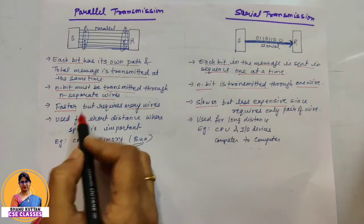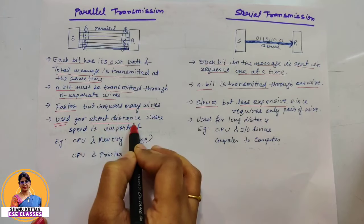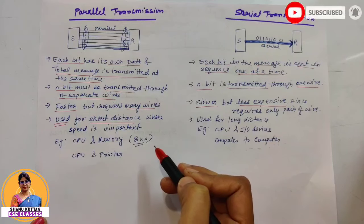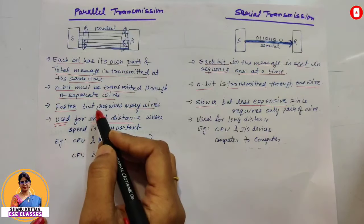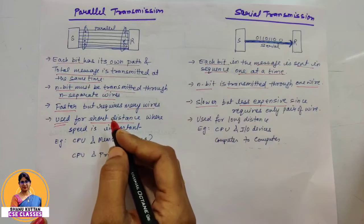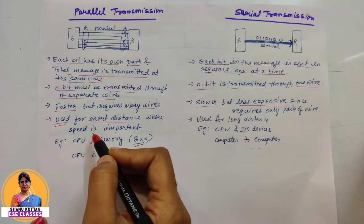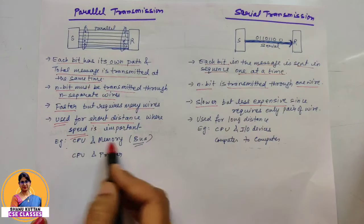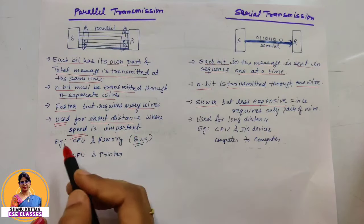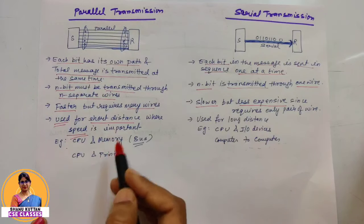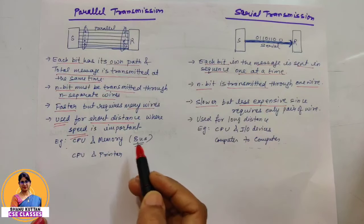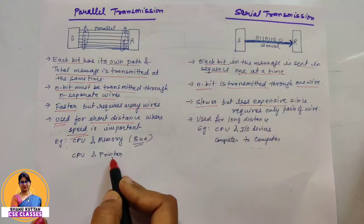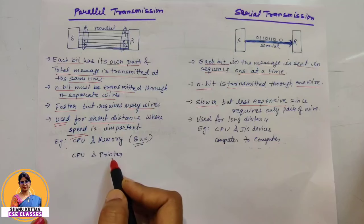Parallel transmission is generally used for short distance transmission. For long distances it becomes expensive, so we use it where faster communication over short distances is needed and speed is very important. For example, between CPU and memory we use a common bus system where there are multiple wires and all bits are transmitted in parallel. Similarly, the transmission between CPU and printer also uses parallel transmission.